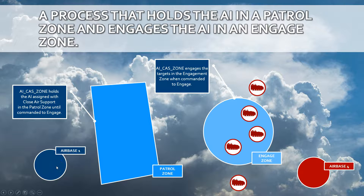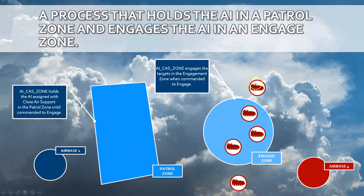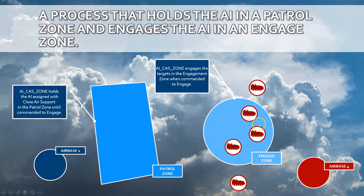A CAS process makes an AI patrol within a zone and engage multiple ground targets located within an engagement zone. Only the targets detected within the engagement zone will be destroyed; the others will be left alone.